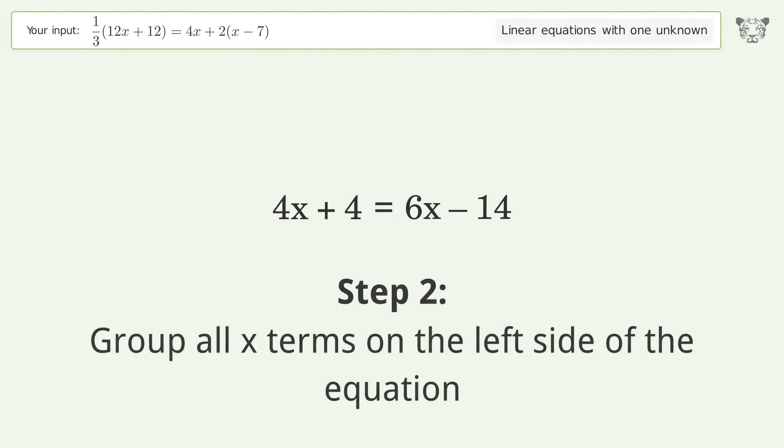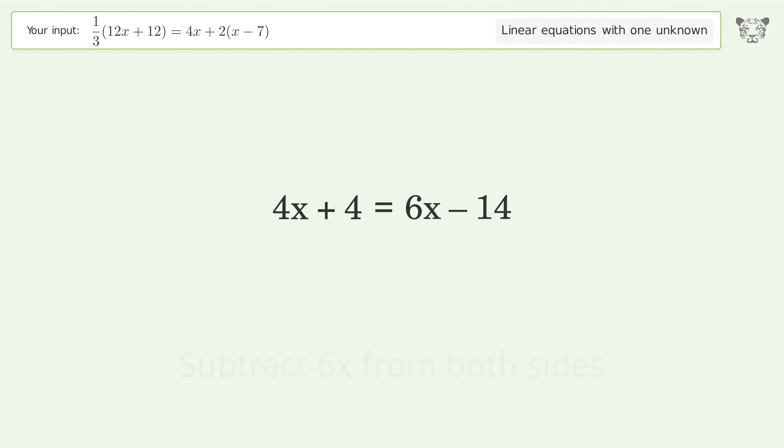Group all x terms on the left side of the equation. Subtract 6x from both sides. Group like terms. Simplify the arithmetic.